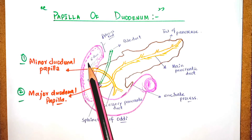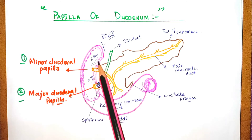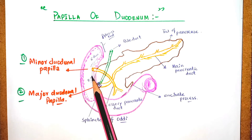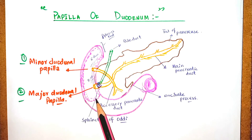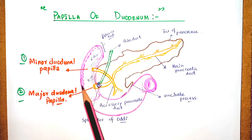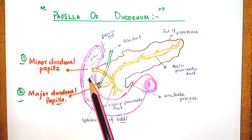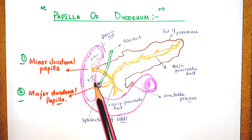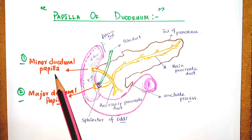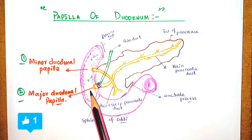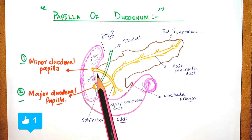In the interior of the duodenum there is thick mucous membrane. In the first part of the duodenum it is smooth, while in the rest of the duodenum it shows special features that are prominent mostly in the second part. It shows numerous circular folds which are called the plica circularis, the minor duodenal papilla, and the major duodenal papilla.